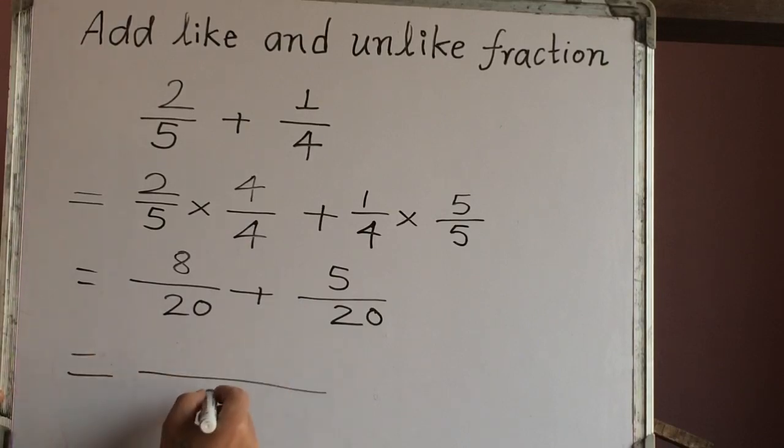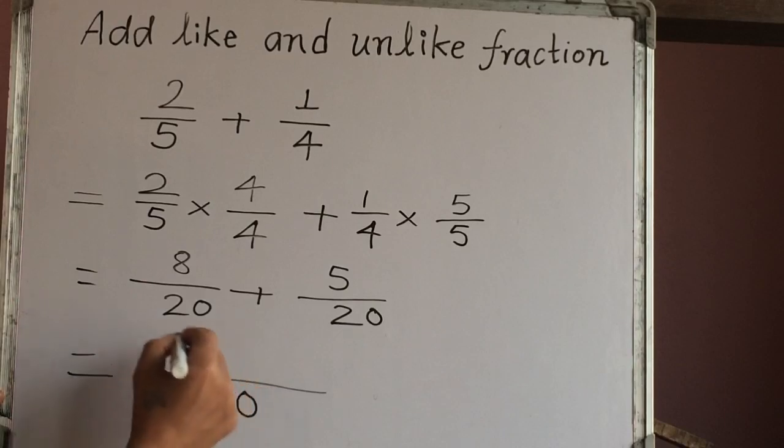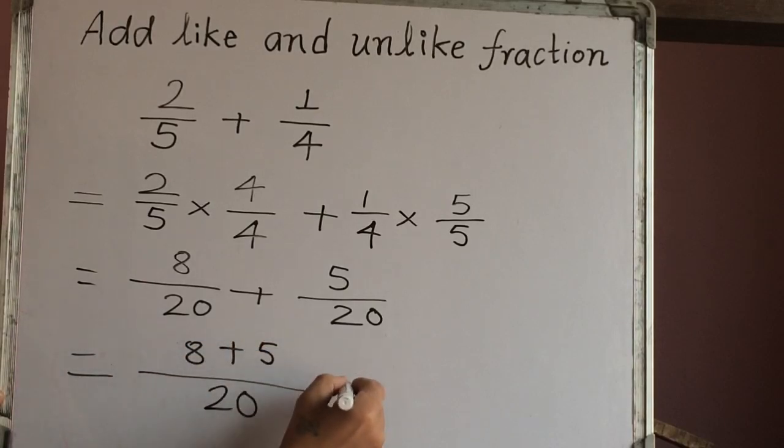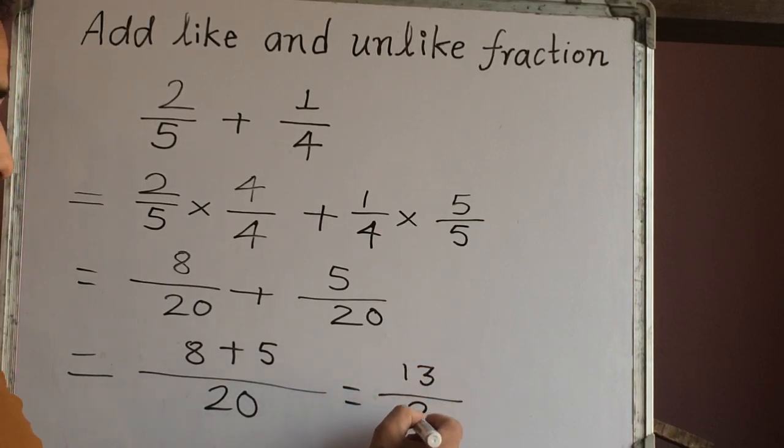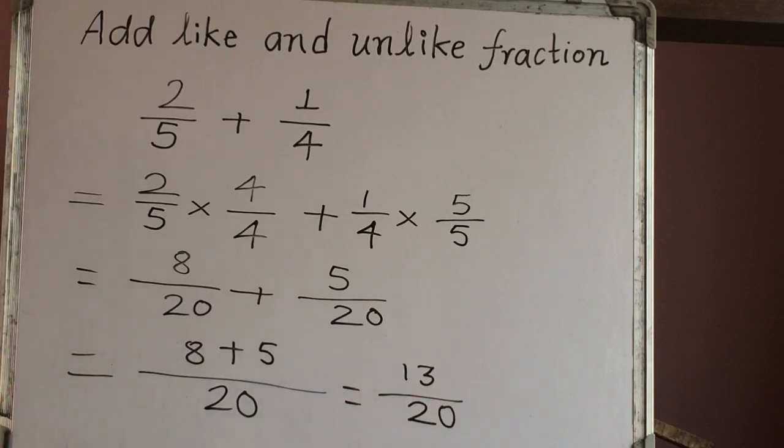Same fraction line. 20. We will just write numerator 1. 8 plus 5, which is 13 out of 20. So in this way we can add unlike fraction.